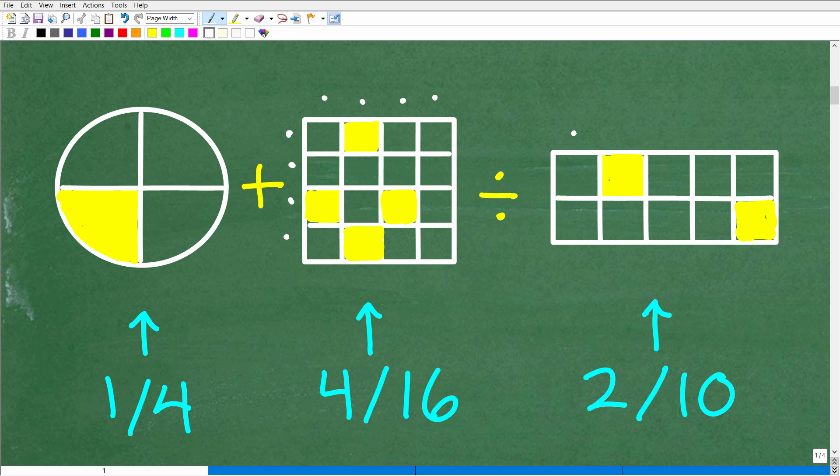And then here, we have what? One, two, three, four, five. Five times two is 10 total boxes. And two are shaded. So, that's two out of 10, right? Or two-tenths. So, effectively, this is the problem. We have one-fourth plus four-sixteenths divided by two-tenths.